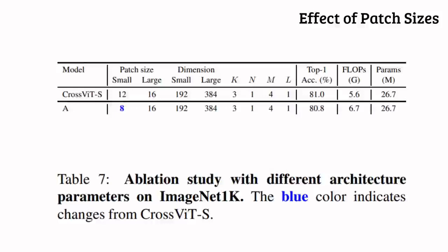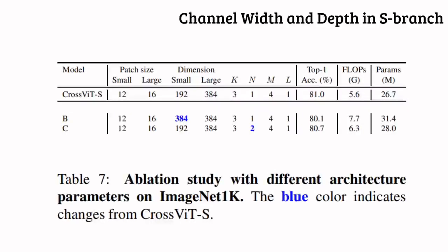They also tried out smaller patch sizes for the small branch as compared to the patch size of 12. What is interesting is that using a smaller patch size causes the accuracy to drop. This is kind of weird because one would expect that having smaller patch sizes would allow the small branch to possess more fine-grained information about the image. They also tried to increase embedding dimensions and the number of encoder layers in the small branch and found no accuracy improvements. The explanation given is that the large branch has the main role to extract features while the small branch only provides additional information. Thus, a lightweight branch is enough.